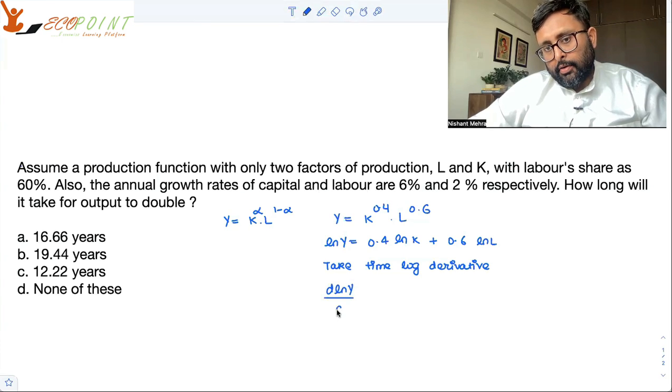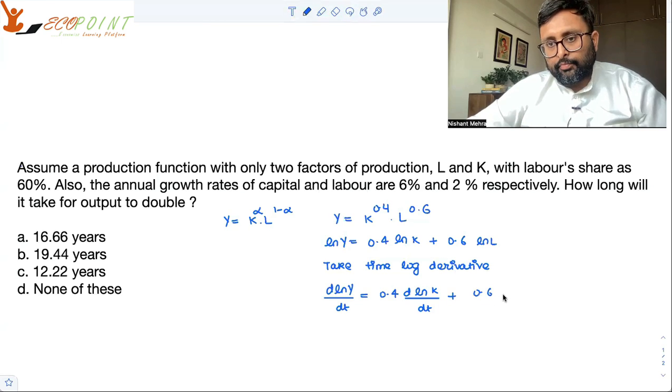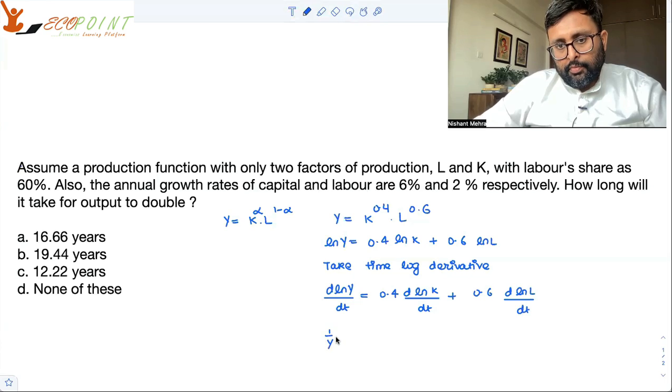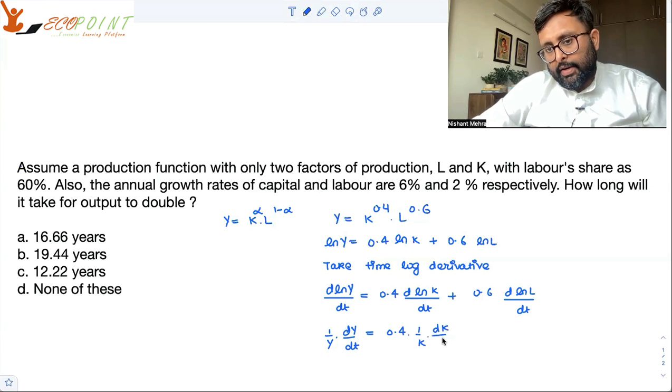Take time log derivative. d log Y upon dt is equal to 0.4 d log K by dt plus 0.6 d log L by dt. So, 1 upon Y, dY by dt is 0.4, 1 upon K, dK by dt.